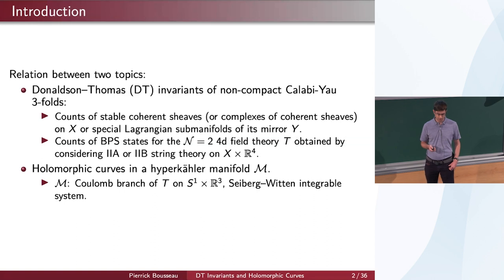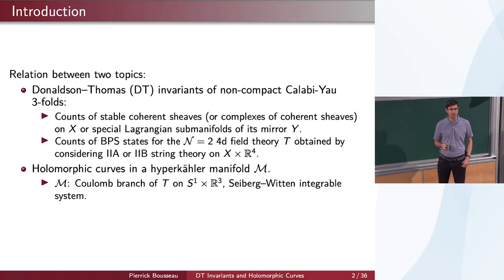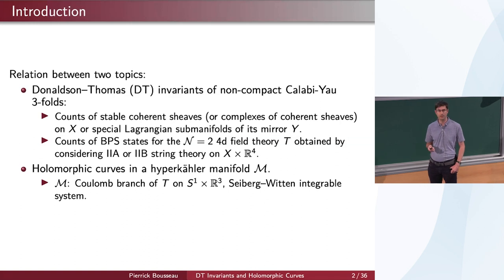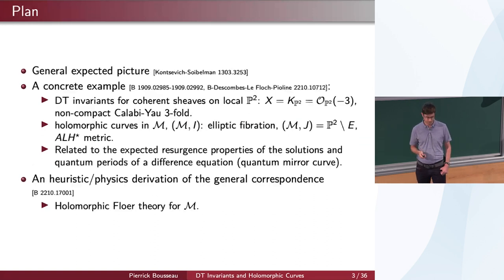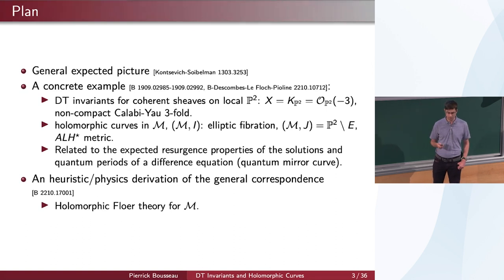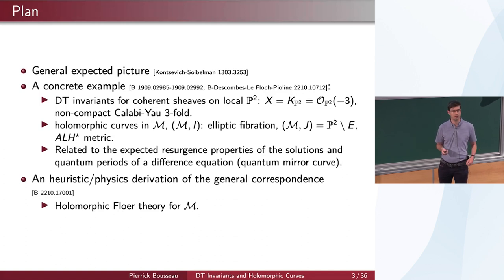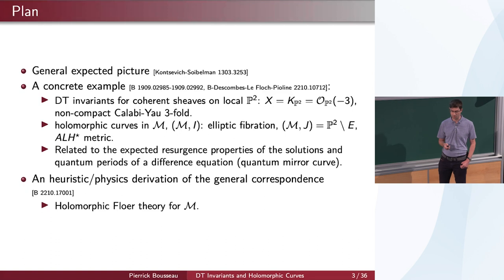The second side is about holomorphic curves in some hyper-Kähler manifold, more precisely some complex integrable system. In some physics language this M is a Coulomb branch of this theory on R³ cross S¹, or it is the Seiberg-Witten integrable system associated to this physical theory. The plan of my talk is first to say a few words about the general picture or general expectation, which is roughly in a paper by Kontsevich-Soibelman on wall-crossing structures for complex integrable systems. Then the heart of this talk will be about a concrete example in which it will be possible to prove such comparison between Donaldson-Thomas invariants coming from geometry of Calabi-Yau threefolds, and holomorphic curves or holomorphic disks in some holomorphic symplectic geometry.